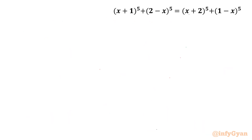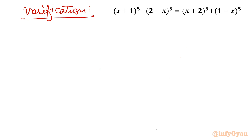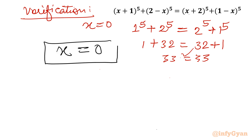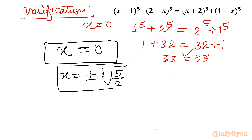Now let us verify for the real solution x = 0. Substituting gives 1^5 + 2^5 = 2^5 + 1^5, which is 1 + 32 = 32 + 1, giving 33 = 33. This is true, so x = 0 is verified. In conclusion, x = 0 is the only real solution, and the two complex solutions are x = ±i√(5/2).